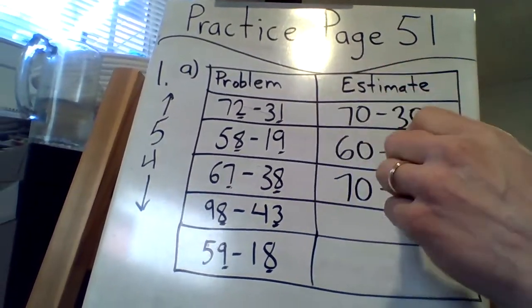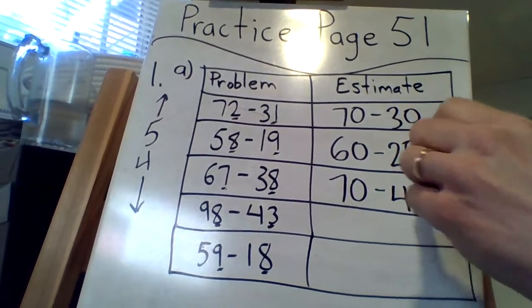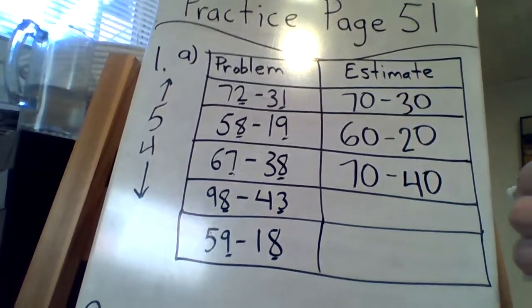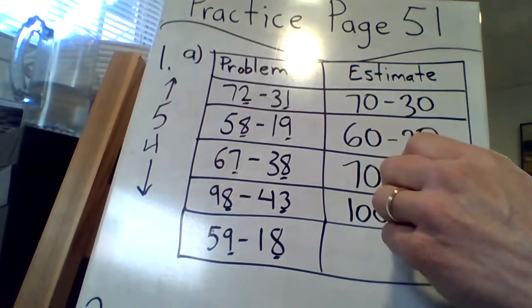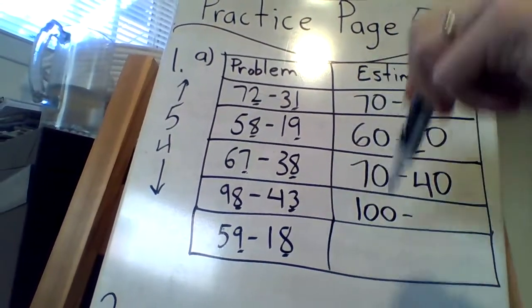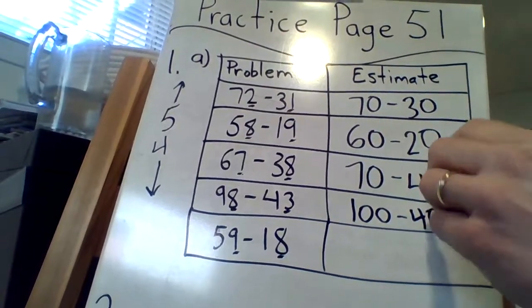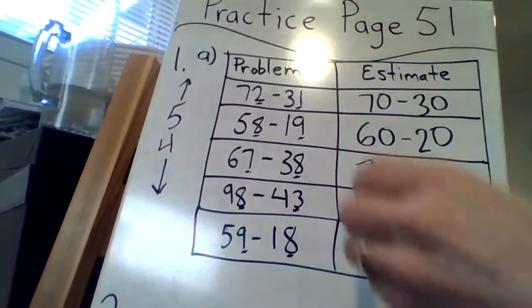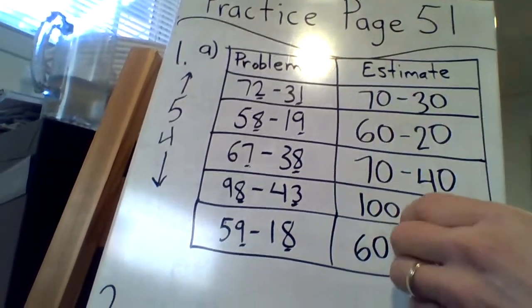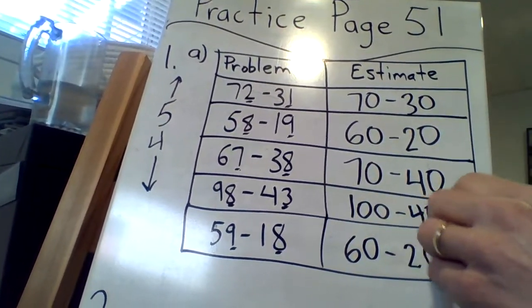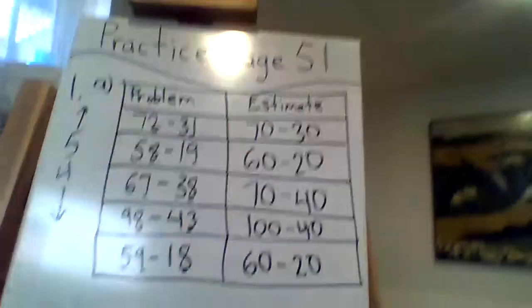67 up to 70. 38 up to 40. 98 up to 100. 43 down to 40. And 59 up to 60. And 18 up to 20. First graph done.